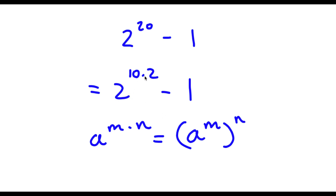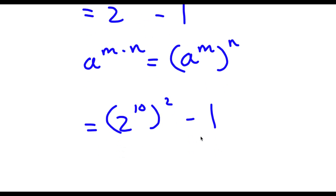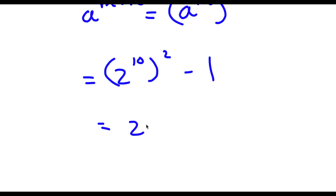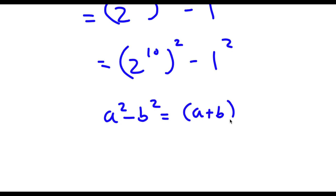So 2 to the power of 10 times 2 is going to equal 2 to the power of 10 to the power of 2, minus 1. Now 1 here is the same thing as 1 squared. And if I have something in the form a squared minus b squared, this is equal to a plus b times a minus b.